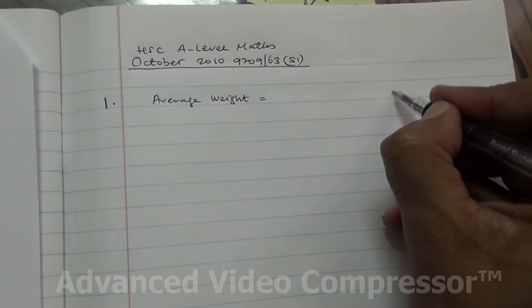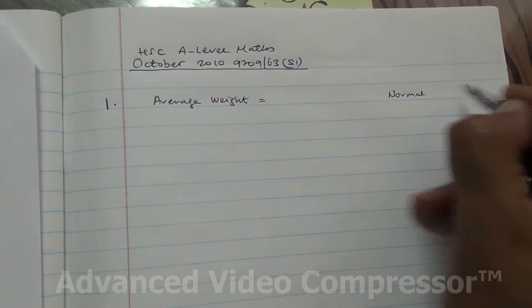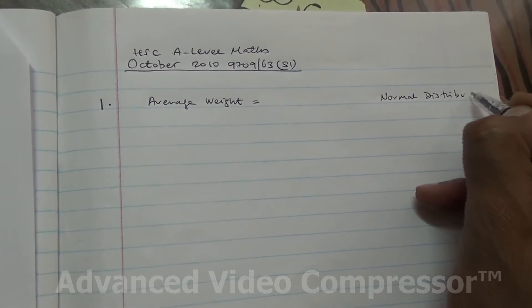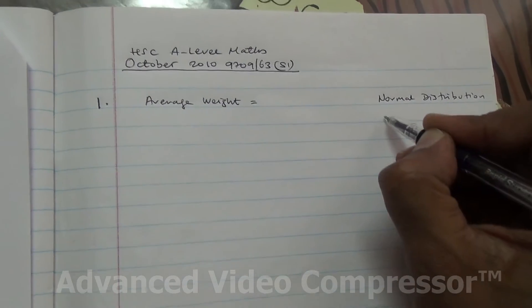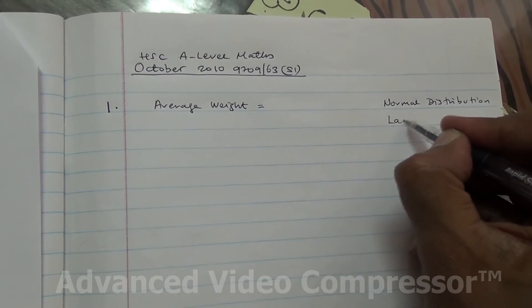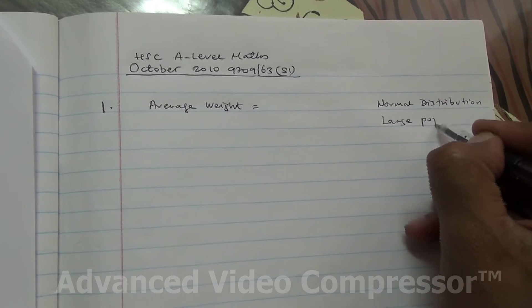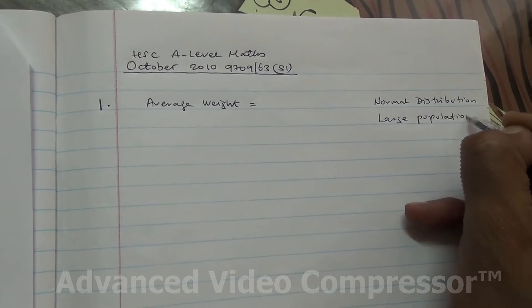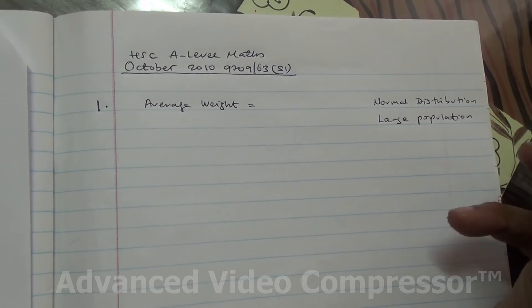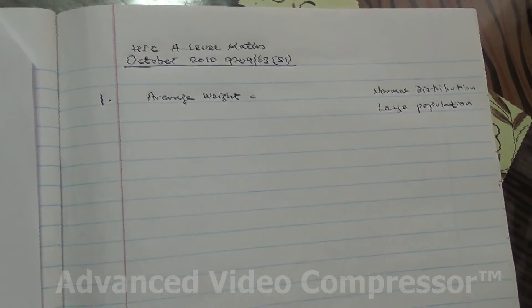I would say the name of the distribution would be normal, a normal distribution. Why? The reason being is that the population would certainly be a large one, because of a large population. 18-year-old students in Mauritius, quite a lot of them, in any country for that matter.